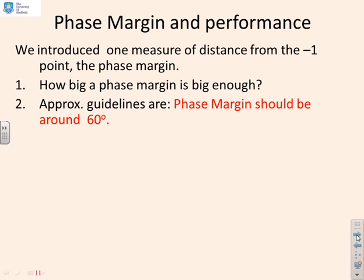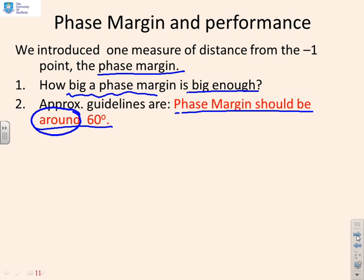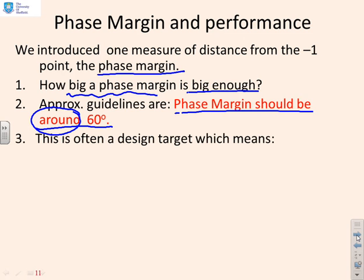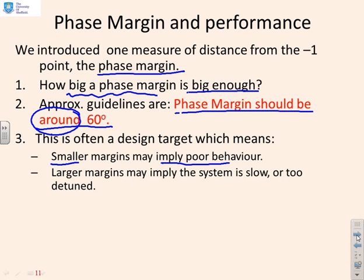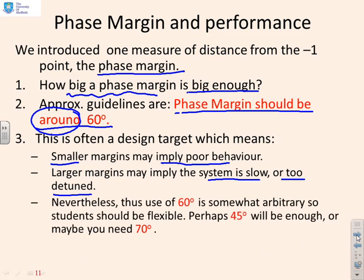We've introduced a measure of distance from the minus 1 point, which is the phase margin. You might ask: how big a phase margin is big enough? Typical guidelines are that the phase margin should be around 60 degrees — but I need to emphasise the word 'around'; it's not exact. If your phase margin is smaller, you might well get poor behaviour. If your margin is bigger, you may find the system is slow or detuned. The 60 degree figure is somewhat arbitrary — there's some basis for second-order systems, but you need to be flexible. For some examples 45 degrees is enough; for others you might need nearer 70 degrees.